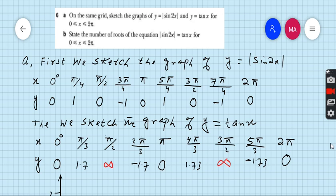So first you can see on the screen part a what I wrote, first we sketch the graph of y equals absolute value sine 2x. So for this graph we have to make the table. You can take any interval. I take the interval of pi by 4, that is 45 degrees, so 0, pi by 4, pi by 2, 3 pi by 4, pi, 5 pi by 4, 3 pi by 2, 7 pi by 4, and 2 pi.